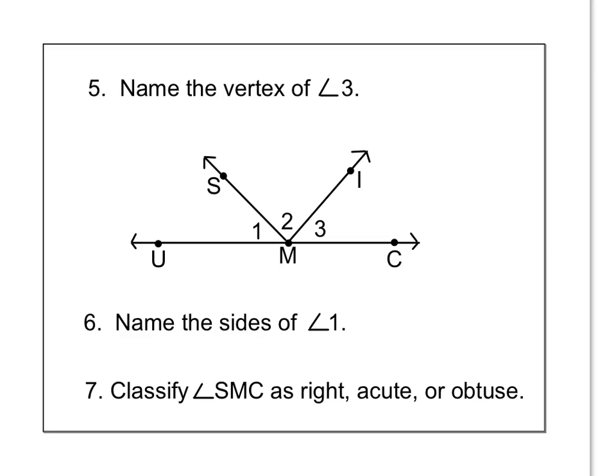So remember, a vertex is like a corner. So here's angle 3. The vertex is right at the corner. It's right here. And so m is your vertex. It's the point or the corner.